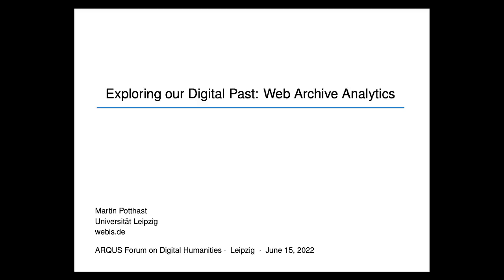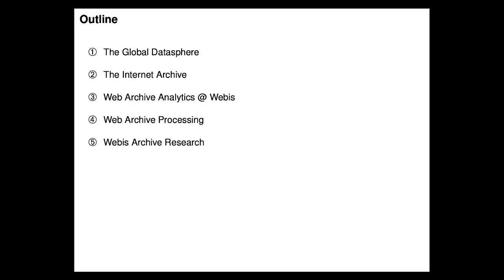Web archives sound a bit dusty, but in the end it's the analytics part that I'm most interested in. So what is web archive analytics? In order to give you an overview, I want to first start at the very beginning — what we want to analyze — and talk about where data comes from and what is the so-called global data sphere. Then our more direct source of data: the Internet Archive, some background on it, and following that an overview of what web archive analytics looks like at the Webis group.